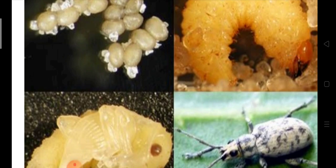Hello students. In this lecture we are going to discuss cotton grey weevil or myelocerous. In our last lecture we have discussed pectinophora gossypiella, pink bollworm and red cotton bug or dysdercus cingulatus. After doing cotton grey weevil, we will be left with cotton jassid, that is empoasca devastans.